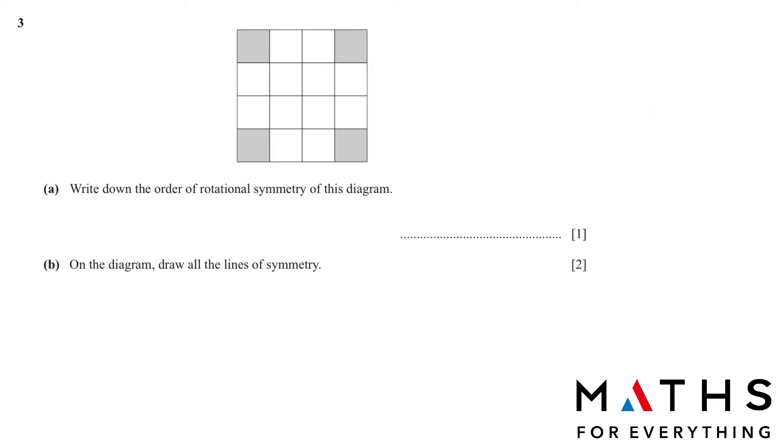Moving on to question number 3. Write down the rotational symmetry of this diagram. On the diagram, draw all the lines of symmetry. Lines of symmetry is that it cuts the graph into equal parts. So this is one line, this is one line. Even the diagonals will cut the shape into two equal parts. These are the lines.